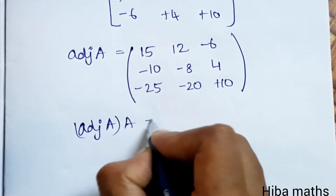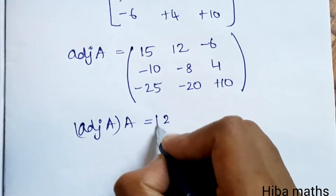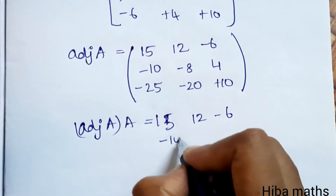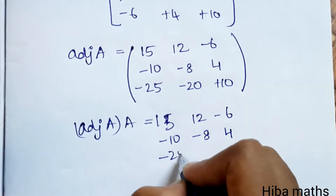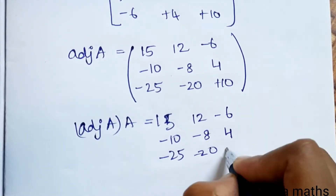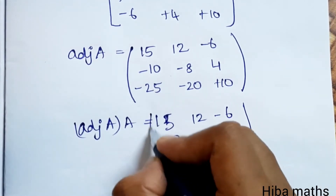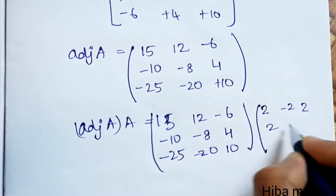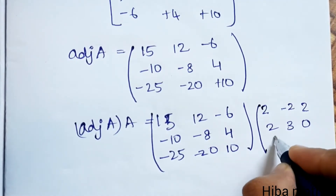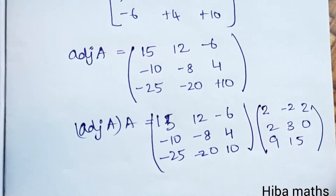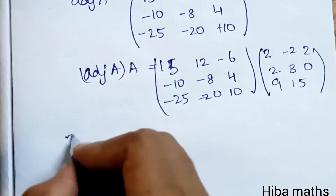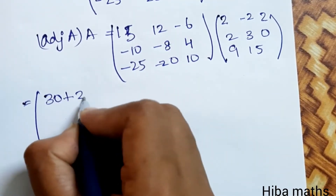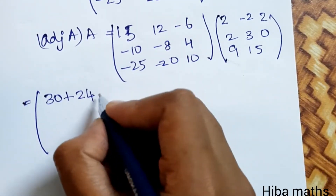Now in the question, adjoint of A into A. So adjoint of A times A equals [[15, 12, -6], [-10, -8, 4], [-25, -20, 10]] multiplied by [[2, -2, 2], [2, 3, 0], [9, 1, 5]]. Using the row-column method to solve: 15 times 2 is 30, 12 times 2 is 24, minus 54.